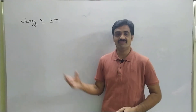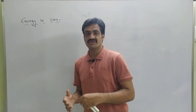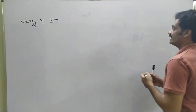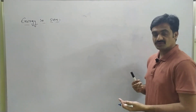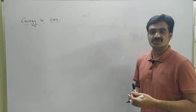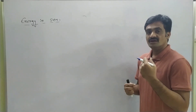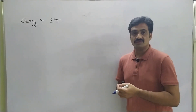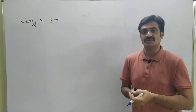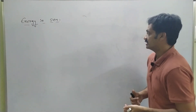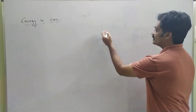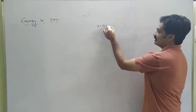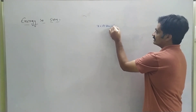Before starting this topic, let us revise what we had discussed in the case of oscillation. In the previous chapters, we had discussed what is meant by circular motion, as well as periodic motion, as well as oscillation. We had represented what is meant by simple harmonic motion, and we had derived the displacement equation as x equals to A sin(ωt + φ).